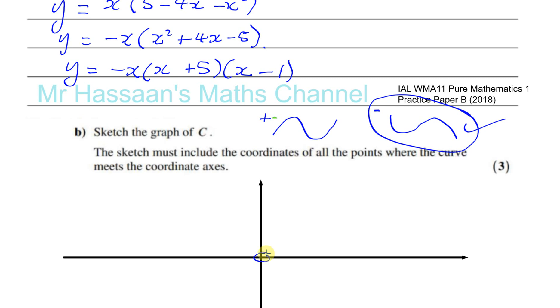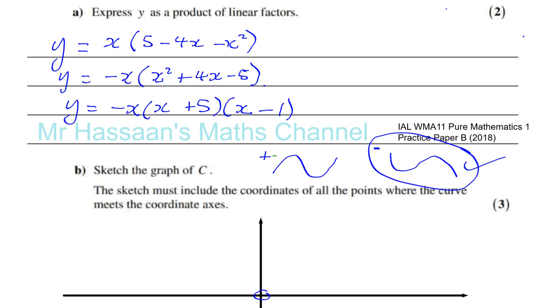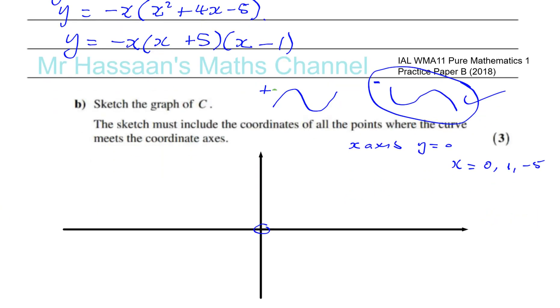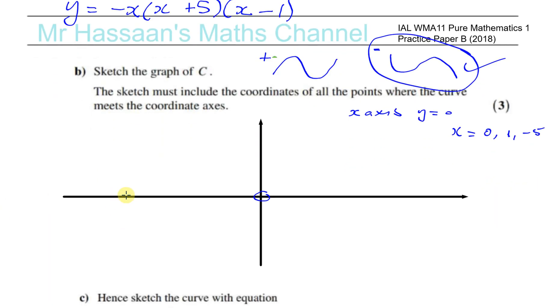Because when X is 0, Y is 0. When X equals 0, Y will be 0. And it also crosses the X axis at two other points. It crosses the X axis when Y is equal to 0. When Y is equal to 0, you've got X equals 0 as we see here. X equals plus 1 and X equals minus 5. So it goes through those points. It goes through minus 5. It goes through 0 and it goes through plus 1.